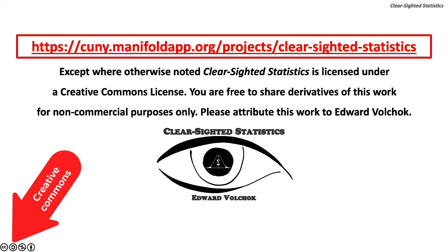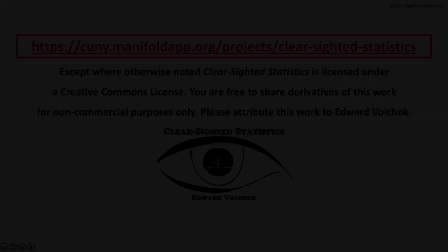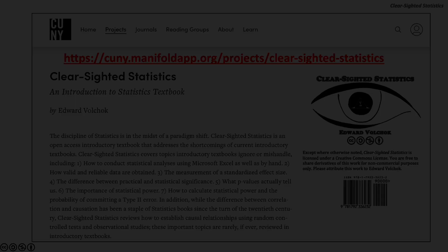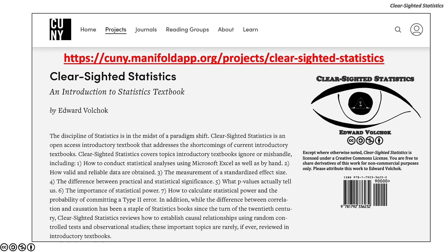Except where otherwise noted, Clearsighted Statistics is licensed under a Creative Commons license. You are free to share derivatives of this work for non-commercial purposes only. Please attribute this work to Edward Volchuk. You can access Clearsighted Statistics for free, along with its Excel and PowerPoint files, on the CUNY Commons at https://cuny.manifoldapp.org/projects/clear-cited-statistics.